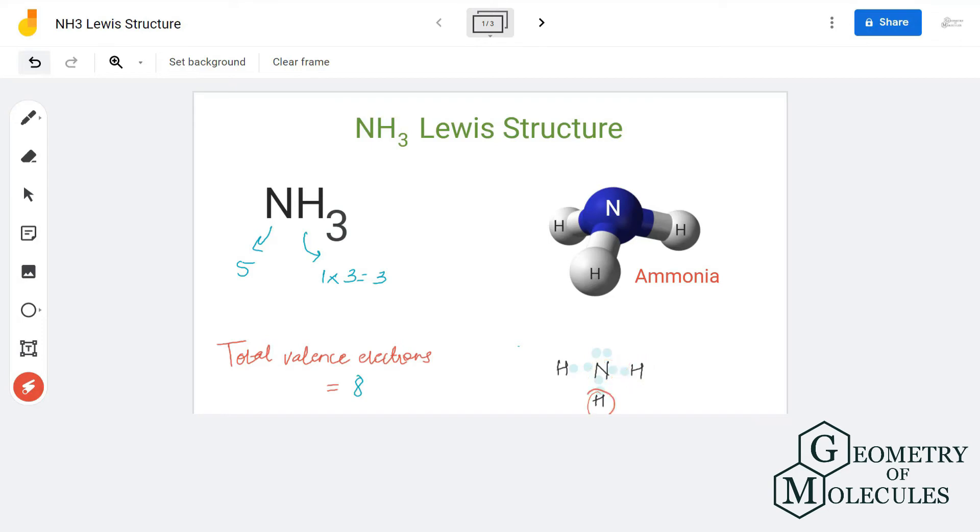Once you have done this, start placing all the valence electrons of individual atoms. Here, hydrogen atom needs two electrons to attain a stable structure. Hence, all hydrogen atoms will share one electron each of nitrogen to complete their octets. Now nitrogen atom is left with one nonbonding pair of electrons.